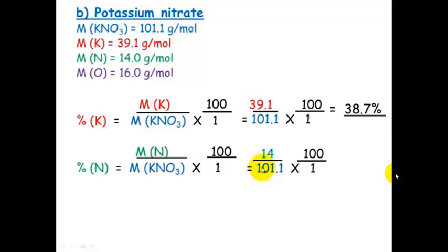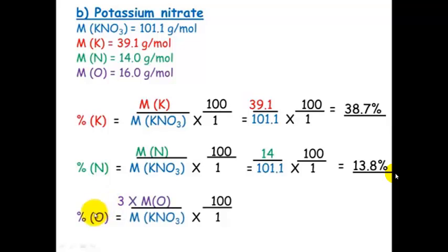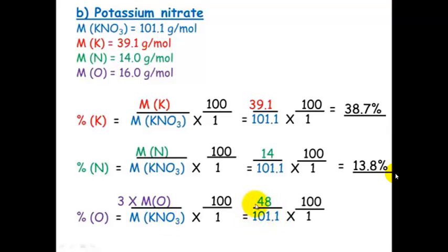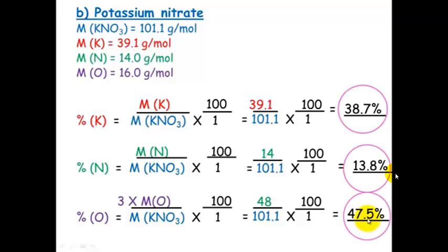The percentage of nitrogen: 14 divided by 101.1 equals 13.8%. For oxygen — remember there are 3 oxygens in potassium nitrate — so we multiply the molar mass of oxygen by 3 and divide by 101.1: 48 divided by 101.1 times 100 equals 47.5%. Check that these all add up to 100% and you know you've got your correct answer.